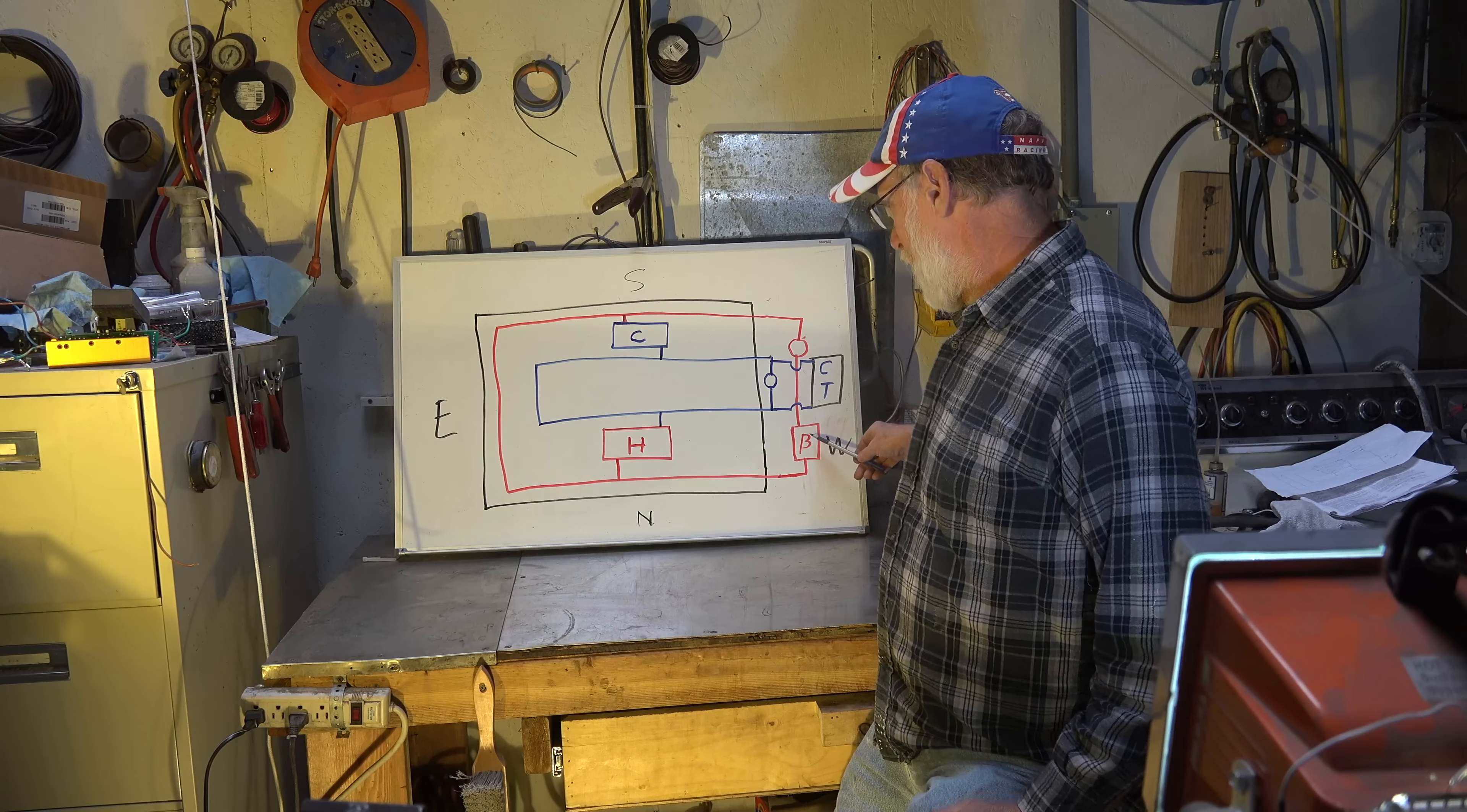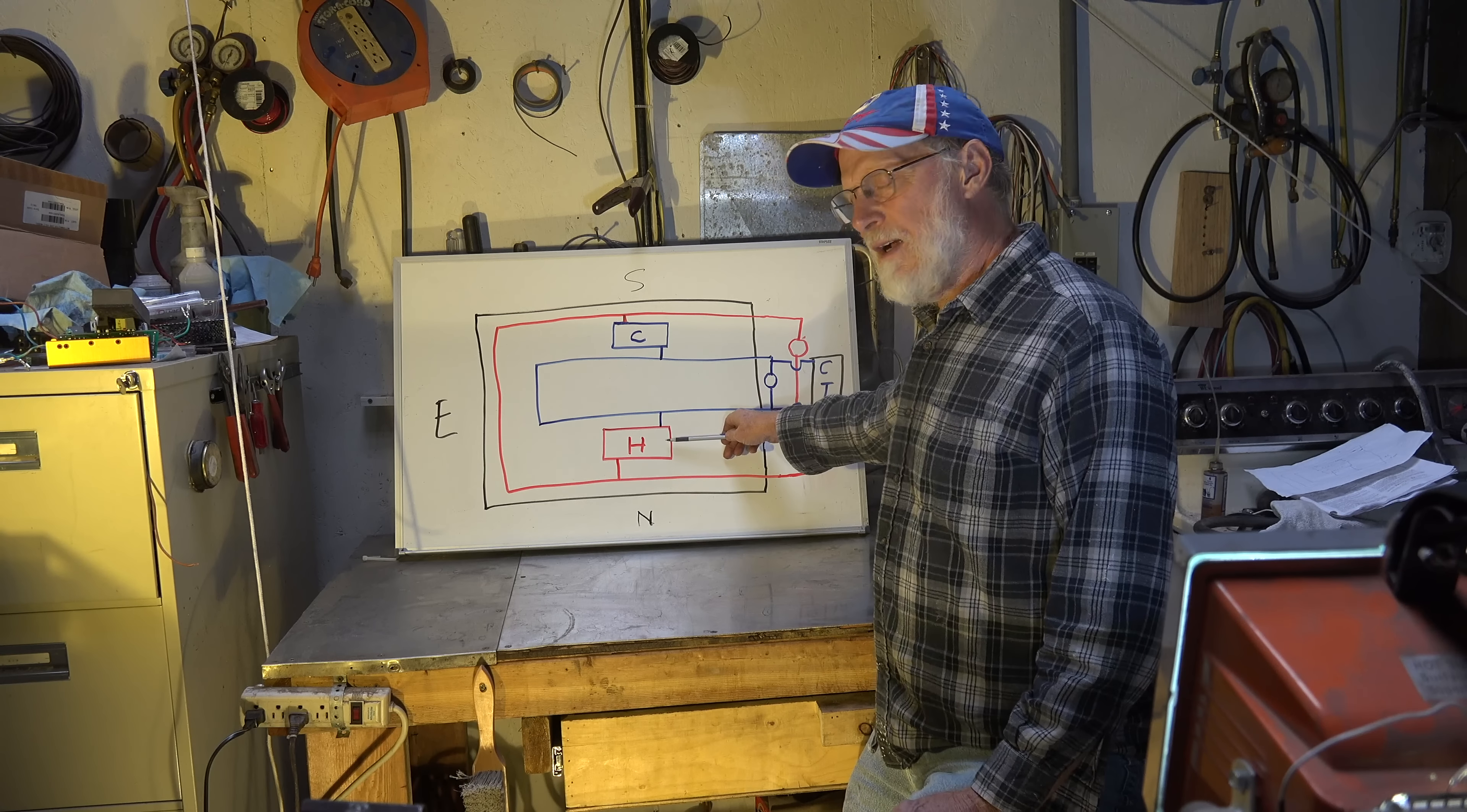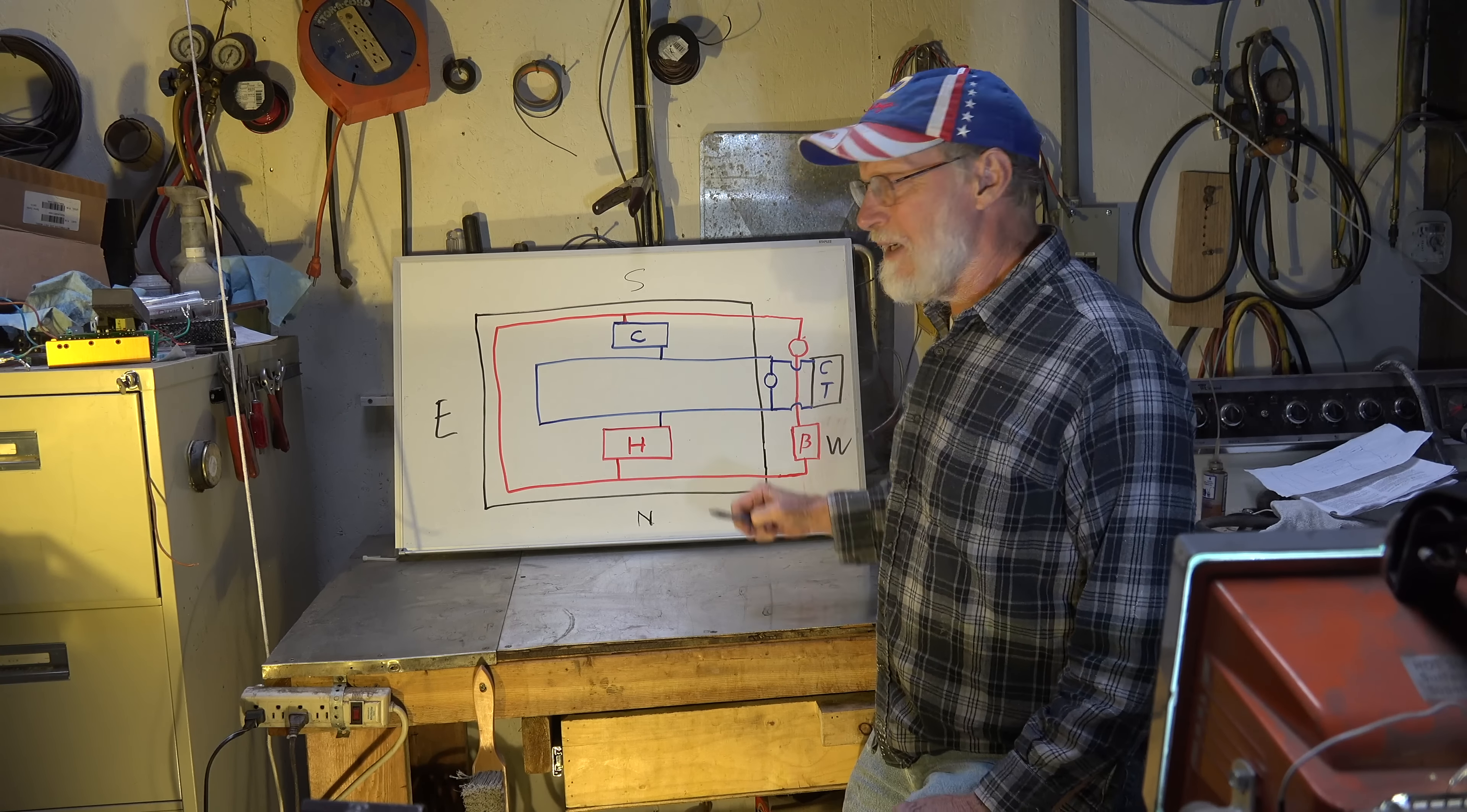Now, if this system works properly, if it's working the way we want it to, the boiler will never come on. Water will just pass through. Also, if everything is working perfectly, the cooling tower will never come on to cool off the water.